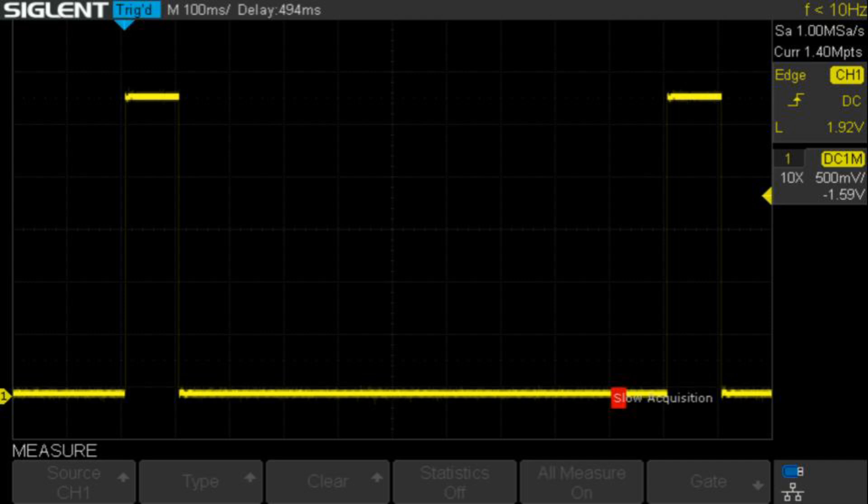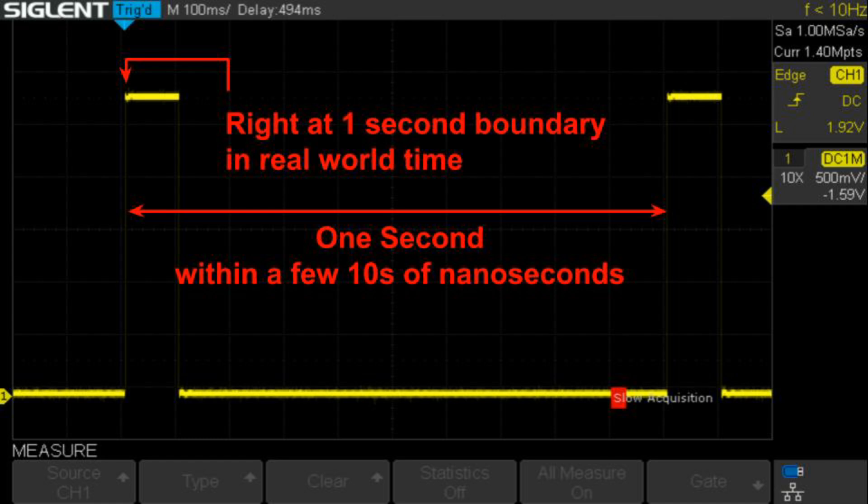It's easy to capture a PPS signal on an oscilloscope. Here's one. There are two characteristics of this signal that we want to examine. First, the rising edge is supposed to happen right at a one-second boundary in real-world time. This is why GPS receivers make such good clocks. The second characteristic is the period, the time between rising edges.